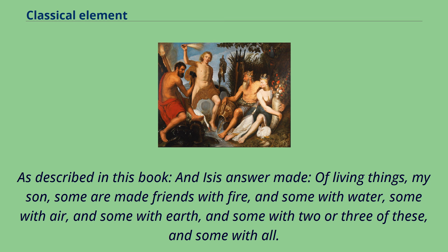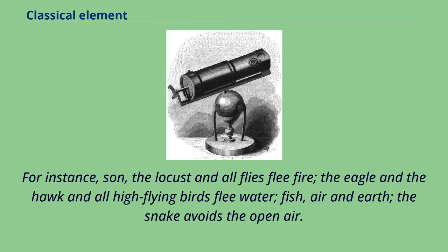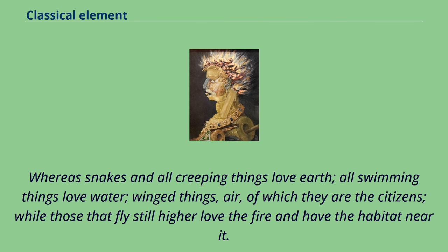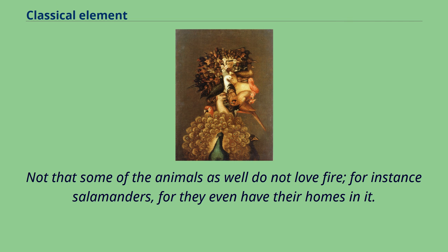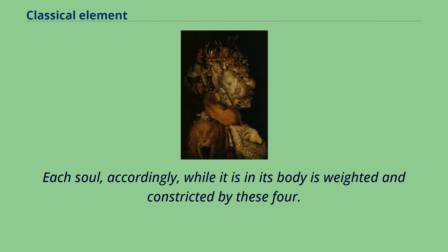And, on the contrary, again some are made enemies of fire, and some of water, some of earth, and some of air, and some of two of them, and some of three, and some of all. For instance, the locust and all flies flee fire; the eagle and the hawk and all high-flying birds flee water; fish flee air and earth; the snake avoids the open air. Whereas snakes and all creeping things love earth, all swimming things love water, winged things love air, of which they are the citizens, while those that fly still higher love the fire and have their habitat near it. Not that some of the animals as well do not love fire — for instance salamanders, for they even have their homes in it. It is because one or another of the elements forms their body's outer envelope. Each soul, accordingly, while it is in its body, is weighted and constricted by these four.